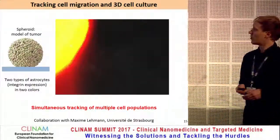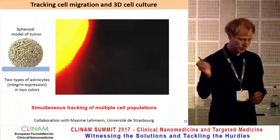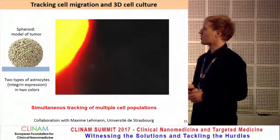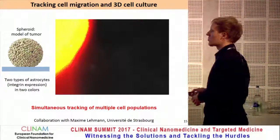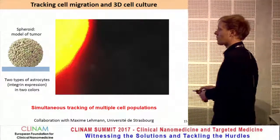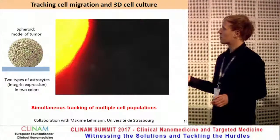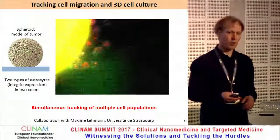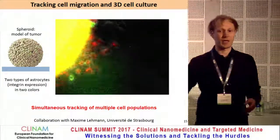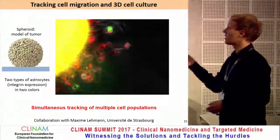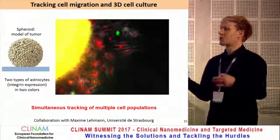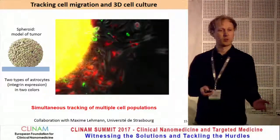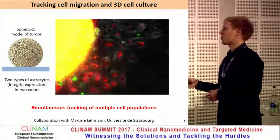We also applied this to 3D cell culture, specifically a spheroid model of a tumor made up of two types of astrocytes labeled in two colors. When placed on a surface and we see the cells coming out, we can very easily distinguish which type of cells comes out at which moment and in which proportions.